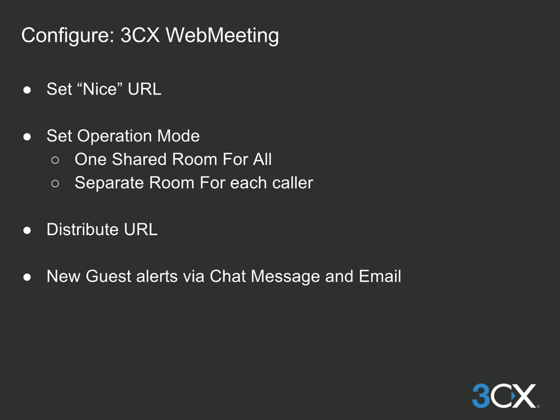Or you can opt to have a separate room for each requester — basically callers calling from a web browser. You can distribute this URL through an email signature or on your business cards, making it easy for people to locate you. Whenever someone connects to the WebMeeting room, the user will be notified by chat message in their 3CX client and also by email, which is particularly useful for people who only use a desktop IP phone but have access to a computer.